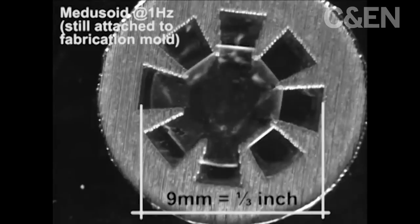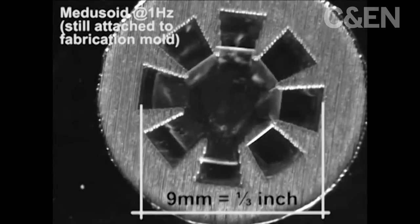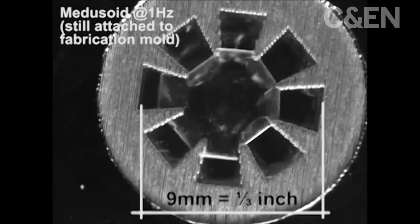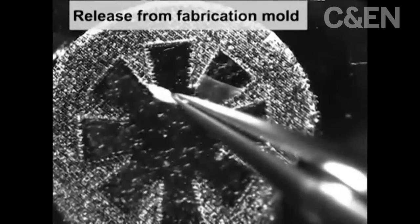Finally, they seeded heart cells from a rat onto the structure and incubated the whole thing to form tissue. The final jellyfish mimic, which the researchers call a medusoid, swims like the real thing. It pumps through an aqueous bath as an electrical field pulses on and off, activating the conductive heart cells on its surface.